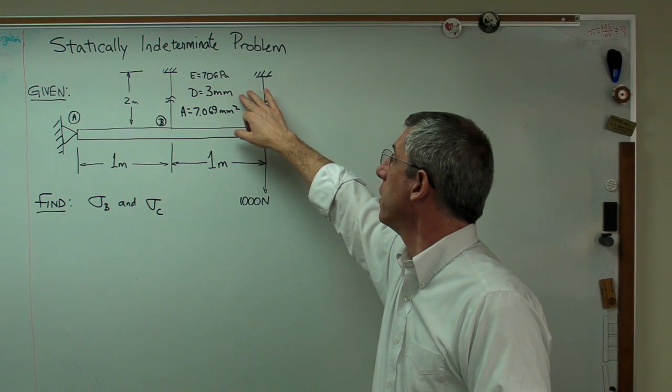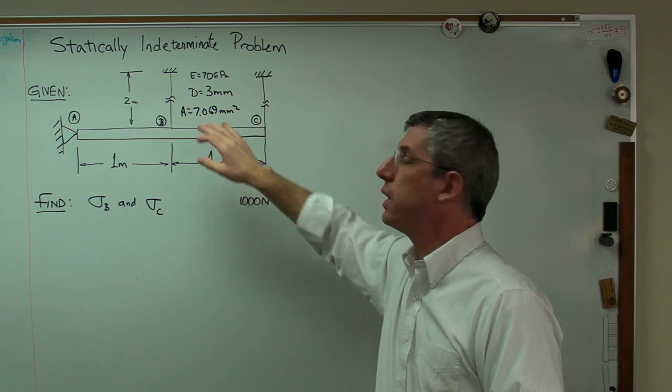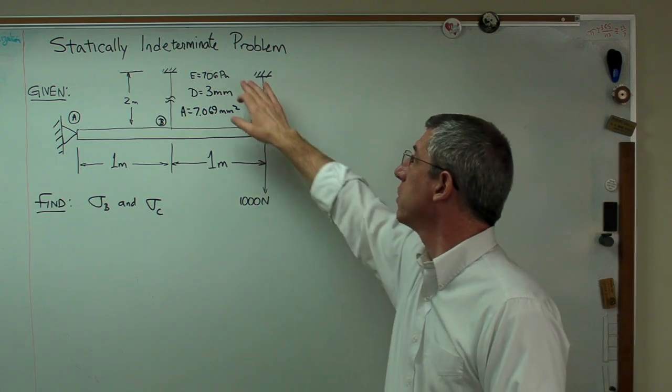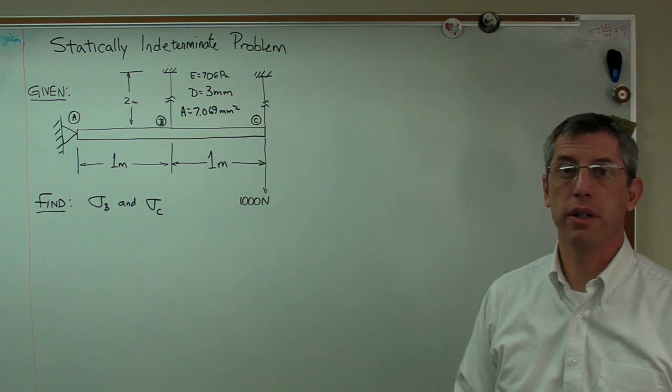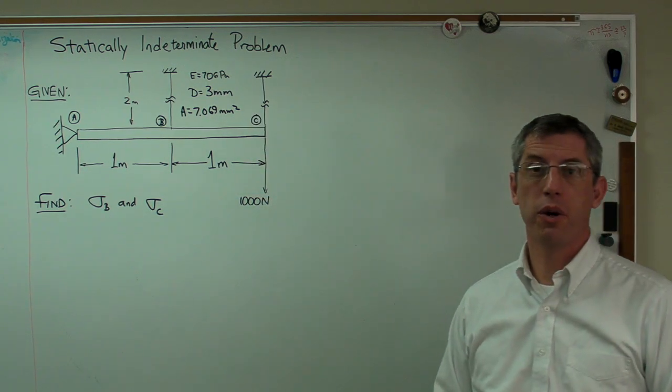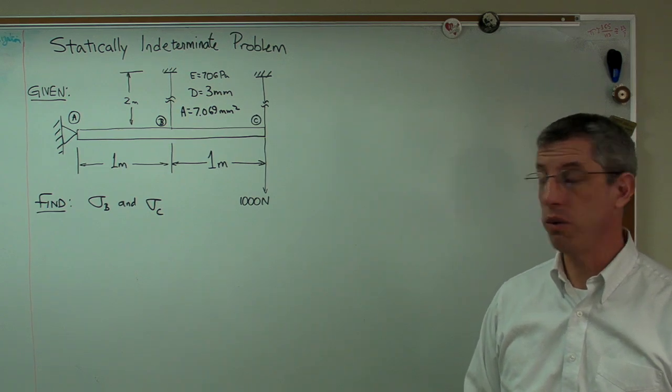The diameter of the wire is three millimeters, which gives you a cross-sectional area of 7.069 millimeters squared, and the elastic modulus is 70 gigapascal. So this is all pretty straightforward stuff, and we've got a force out at the end here of a thousand newtons.